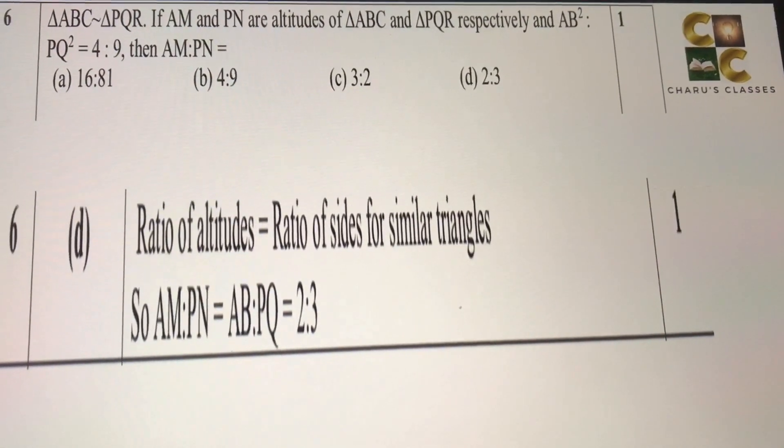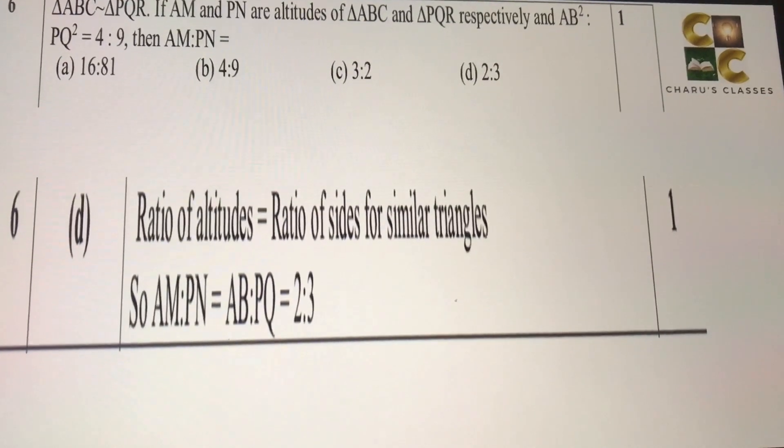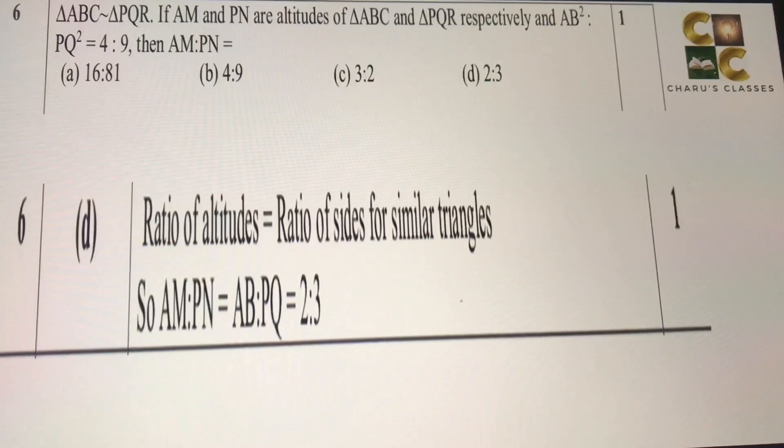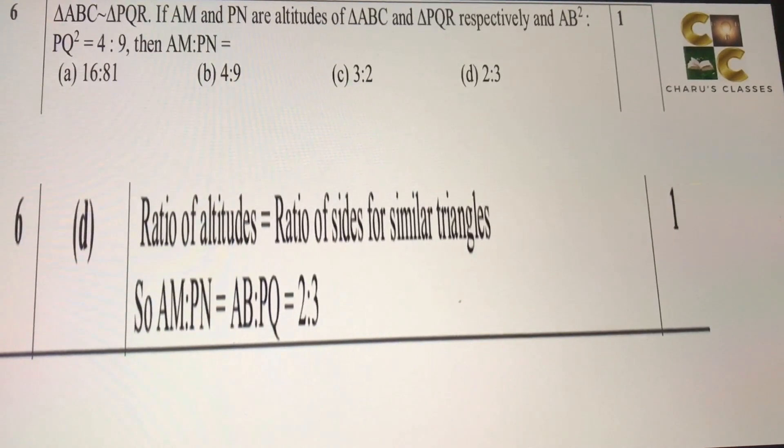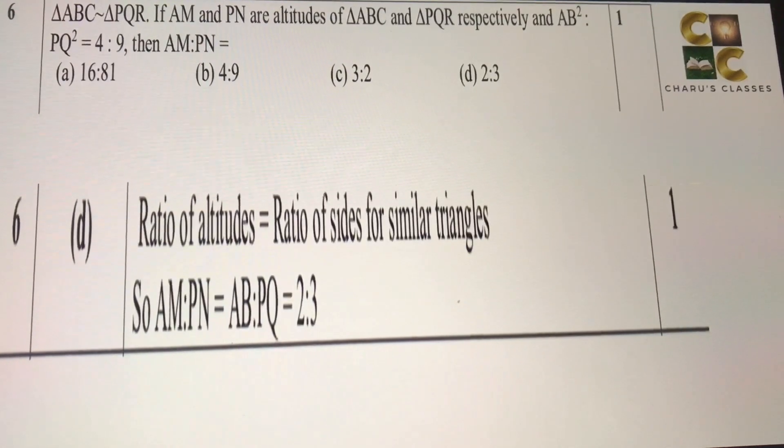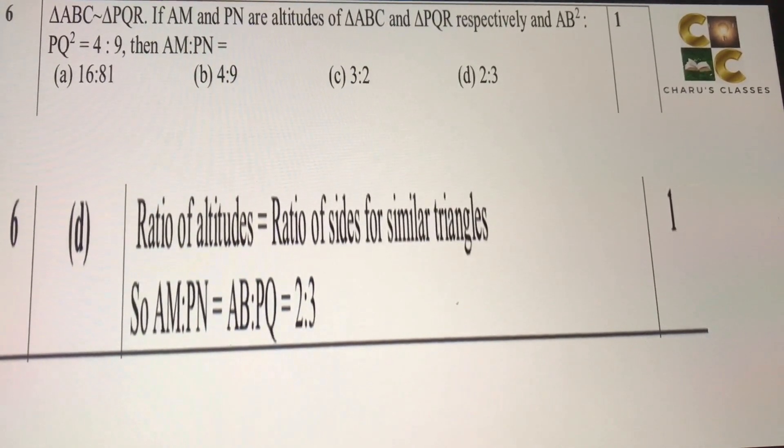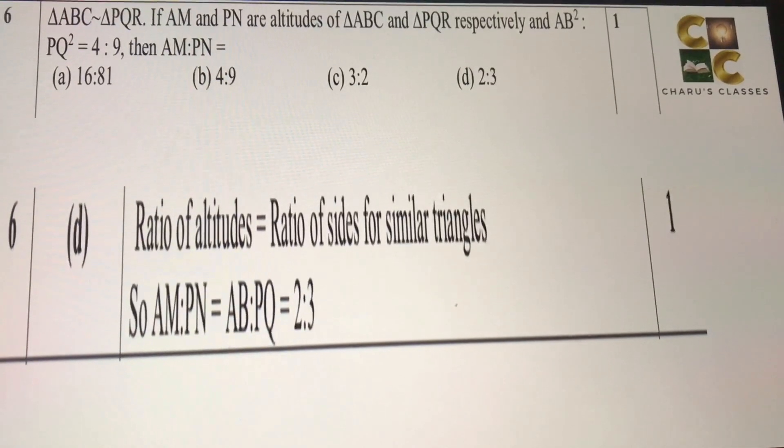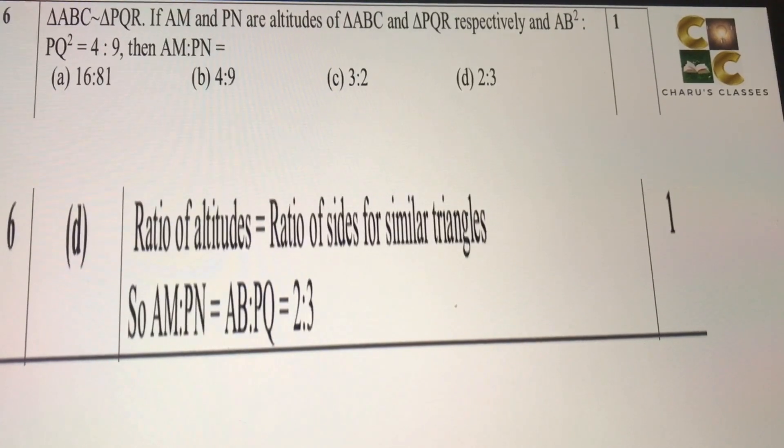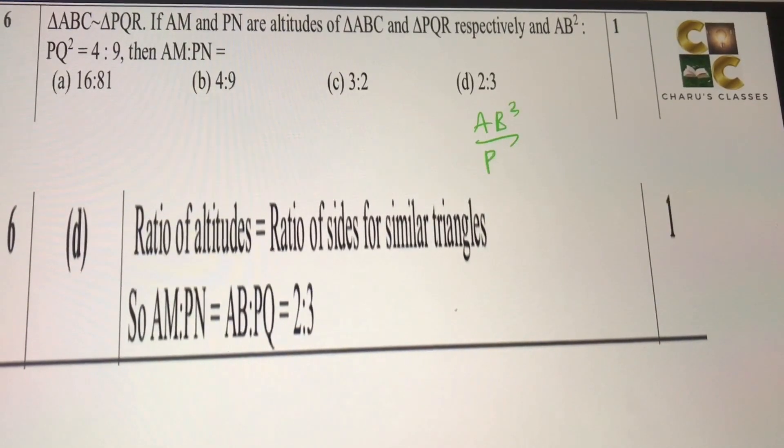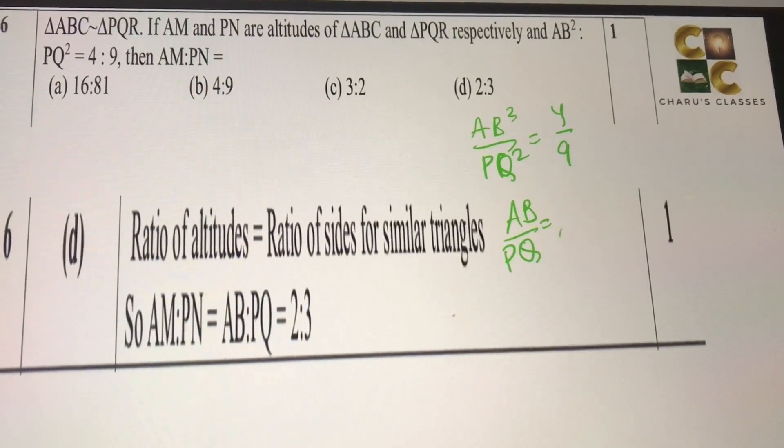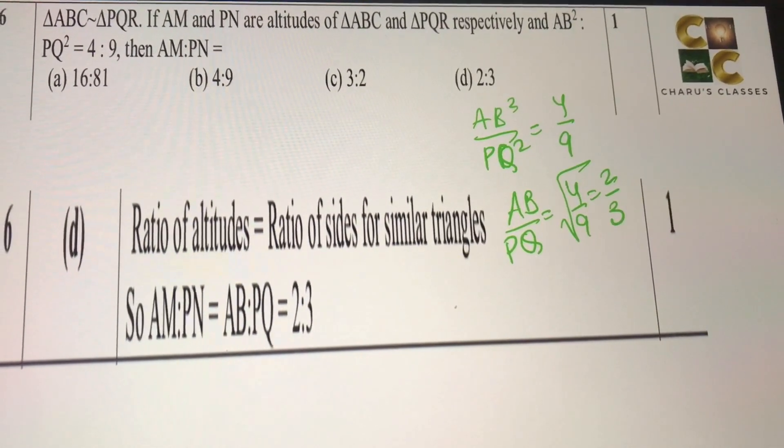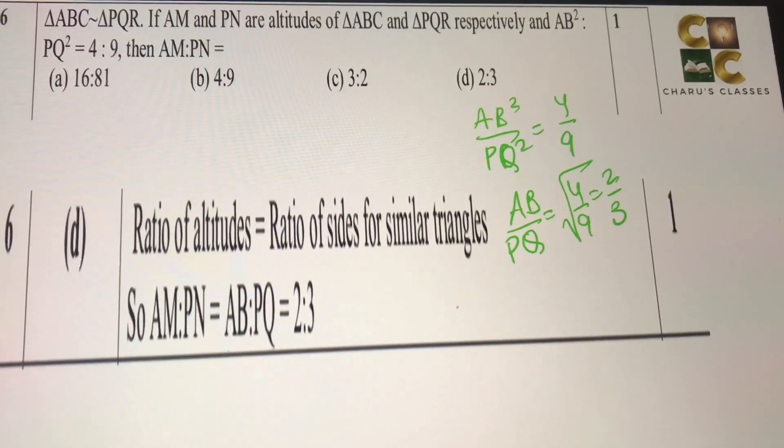Sixth question: triangle ABC is similar to triangle PQR. If AM and PN are altitudes of triangle ABC and triangle PQR respectively, and AB square to PQ square is 4 to 9, then AM to PN is equal to? AM and PN are altitudes of these two triangles, which are given similar to each other. So, ratio of altitudes of two similar triangles is equal to ratio of sides of two similar triangles. Here AB square by PQ square is given as 4 by 9. So you will have AB by PQ as square root of 4 by 9, which is 2 by 3. Therefore, the answer will be 2 is to 3.